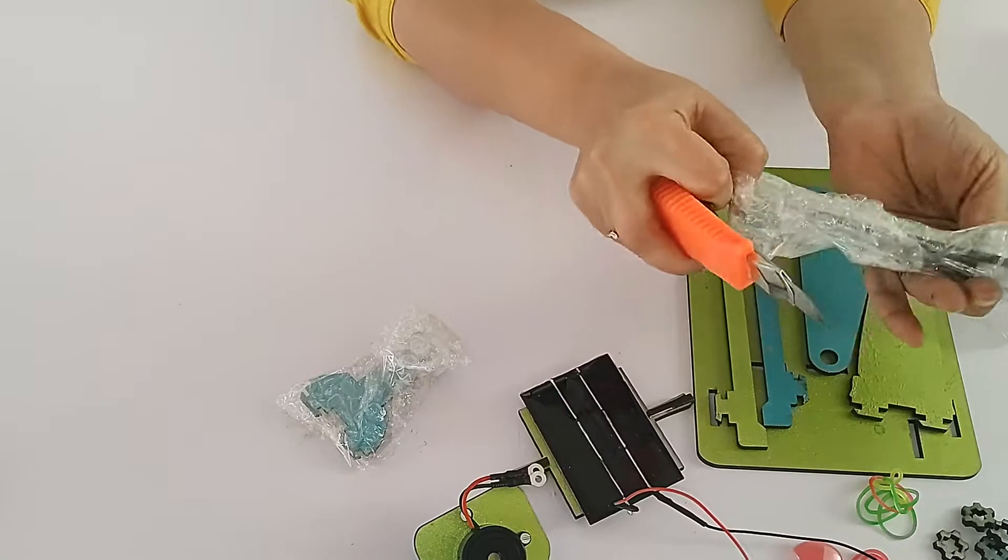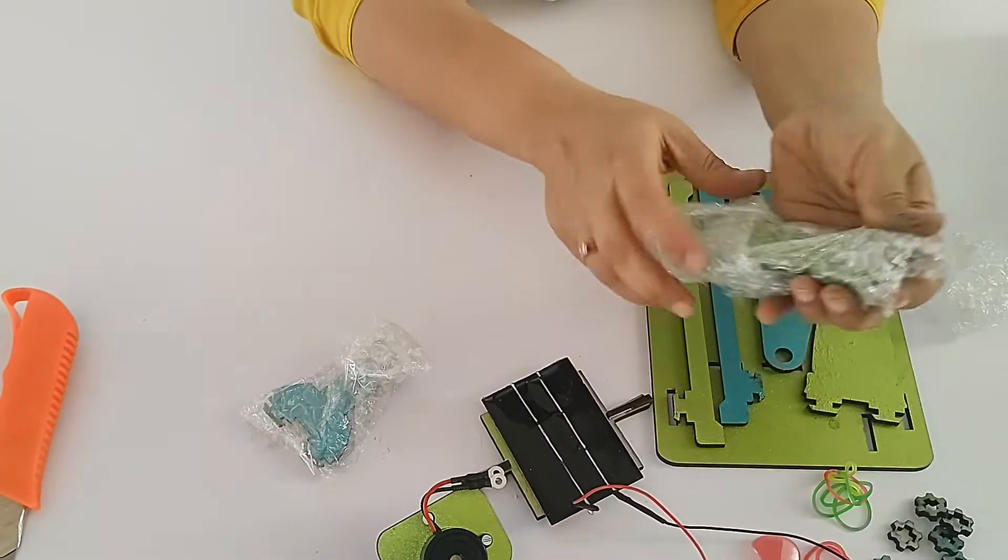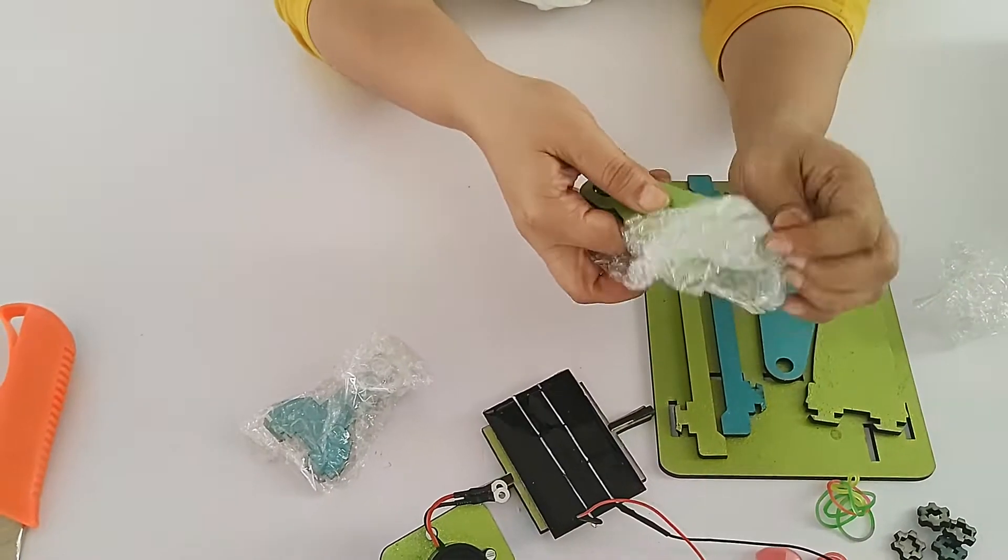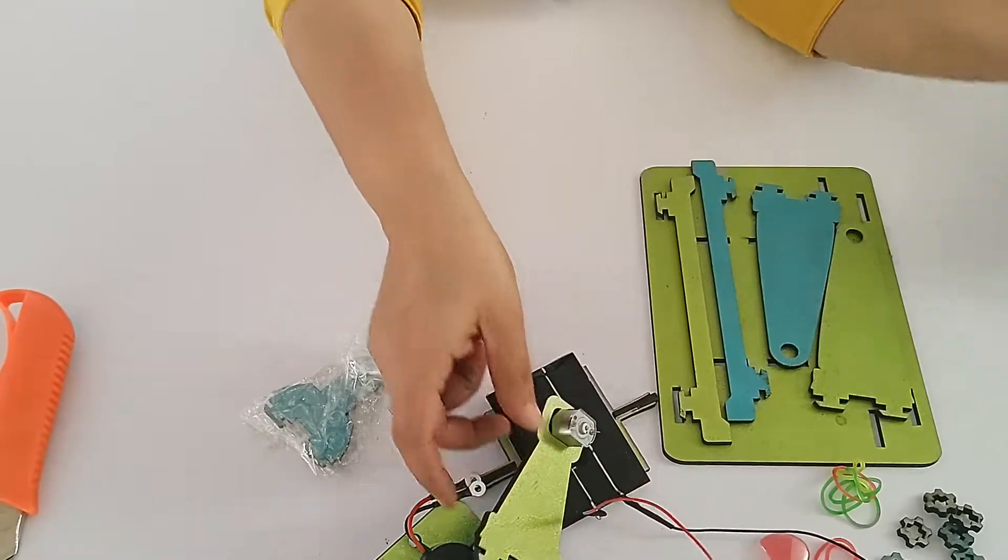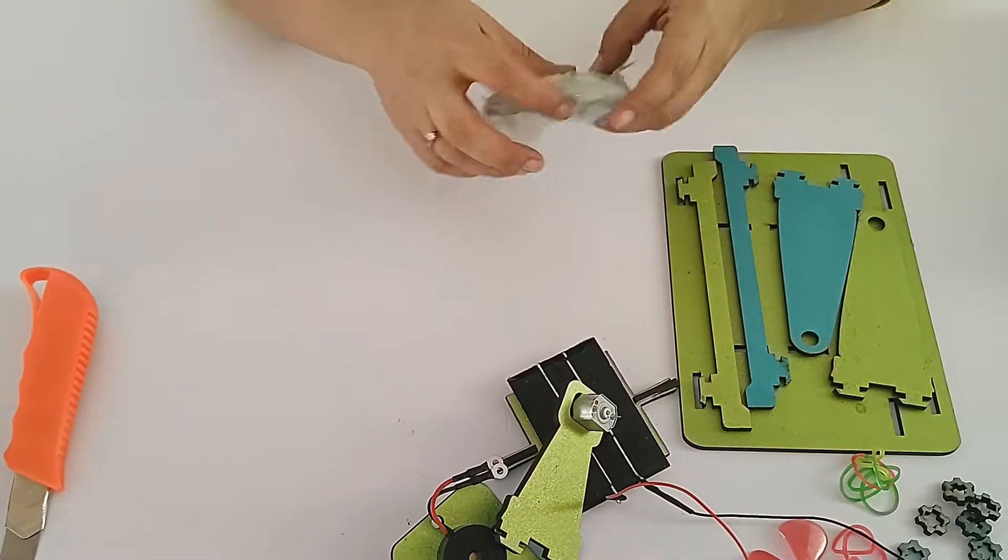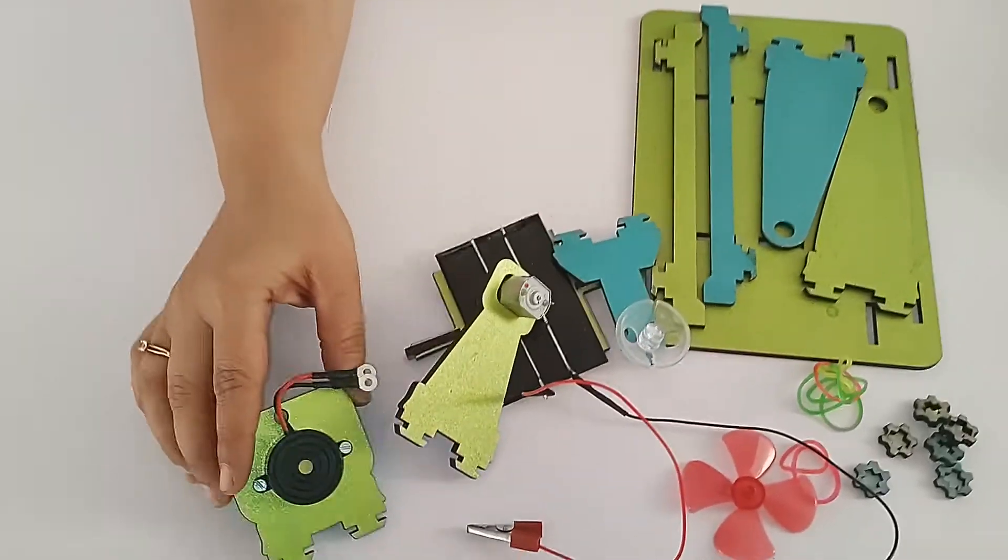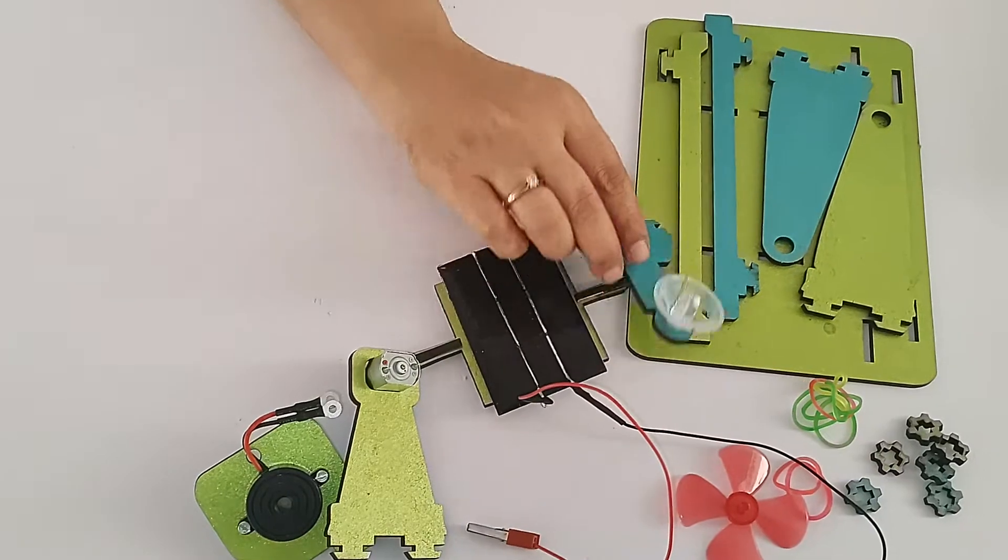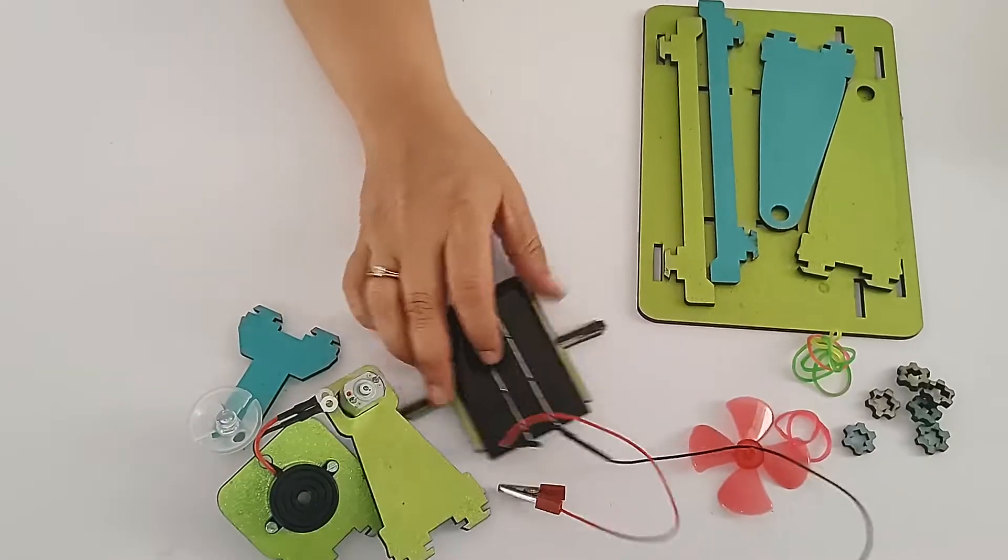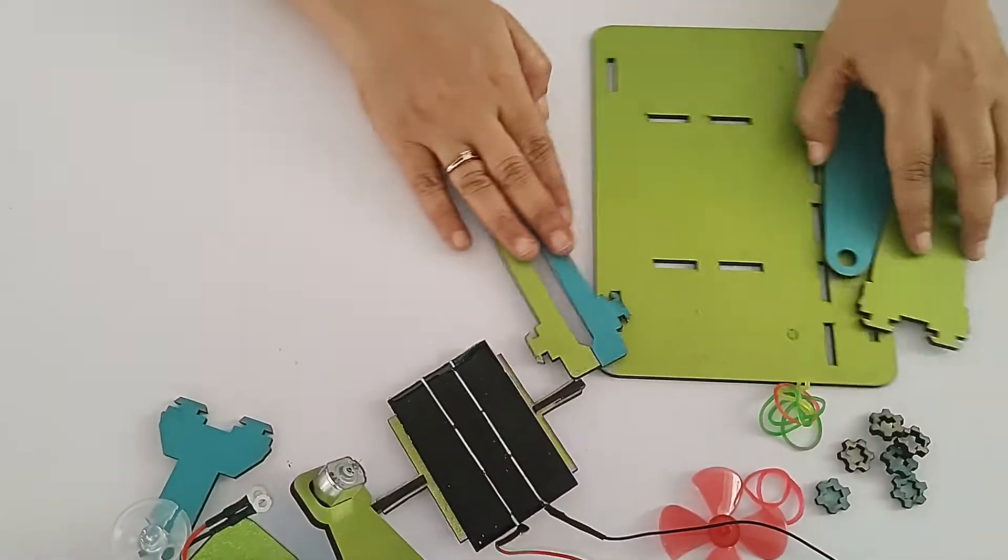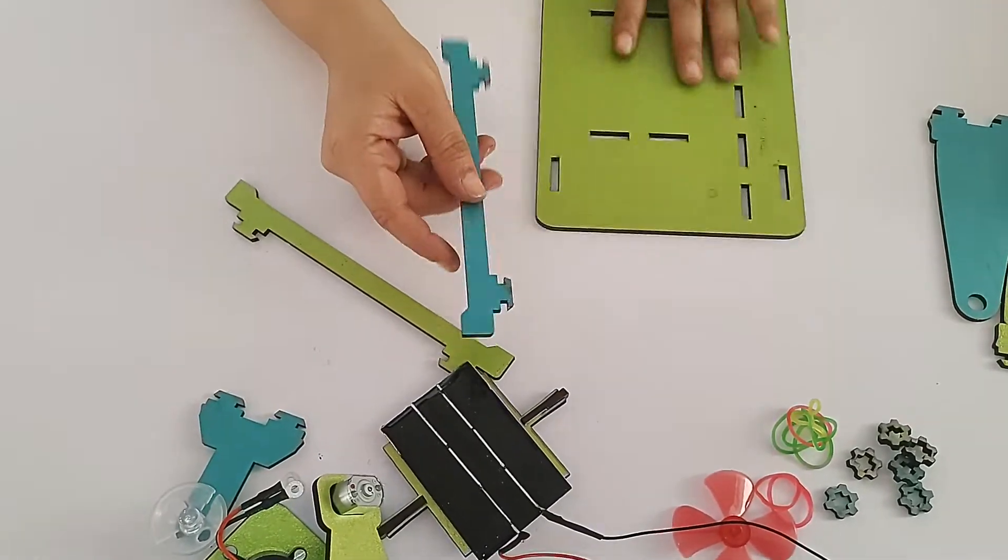This one is the motor and last is LED. So we are going to show basically three conversions of solar electricity using these three components: motor, buzzer, and LED with the solar panel. First, let's assemble the project base.